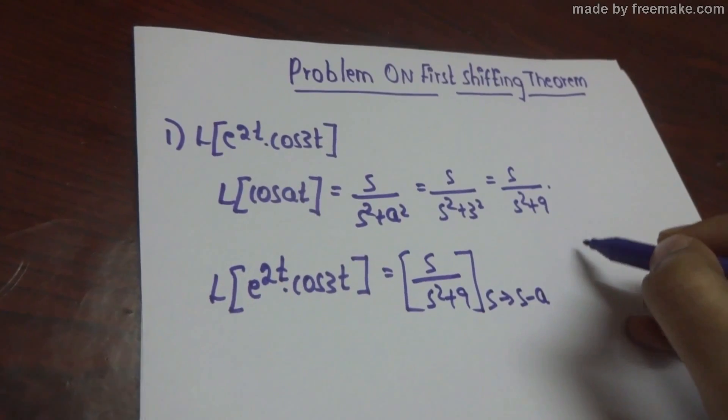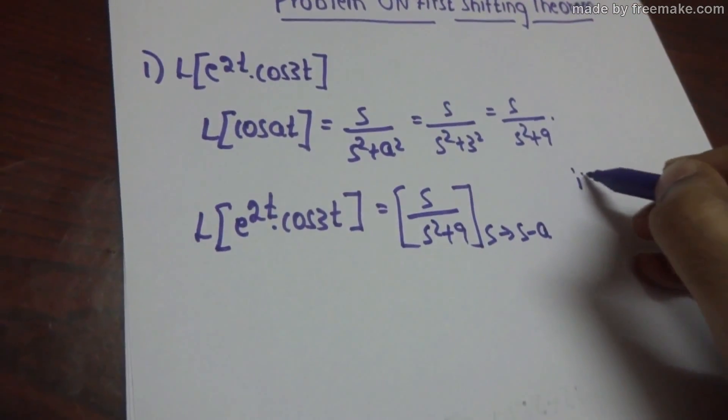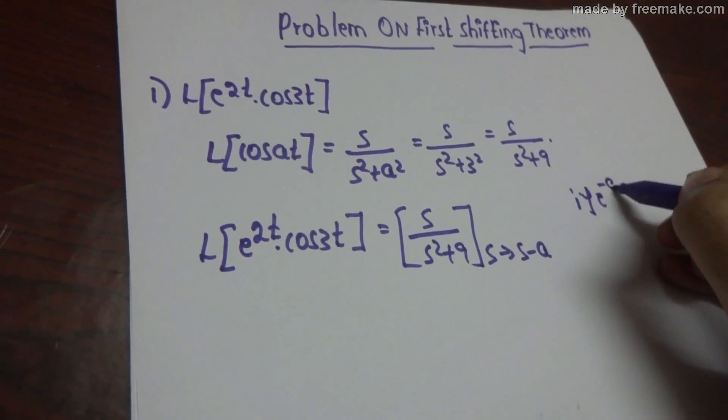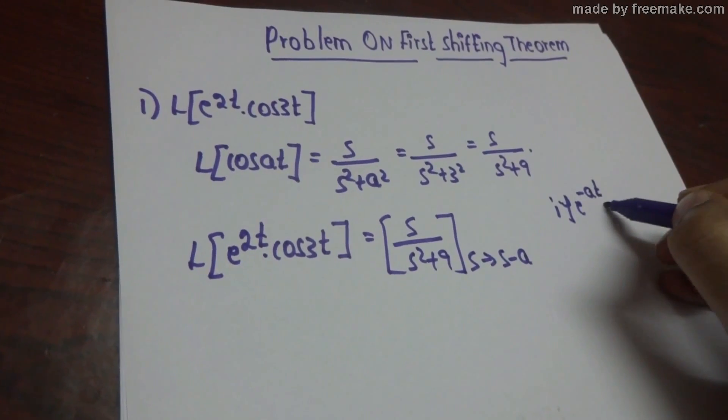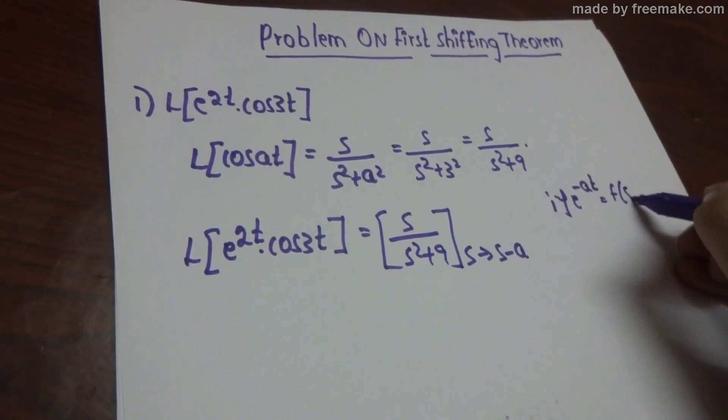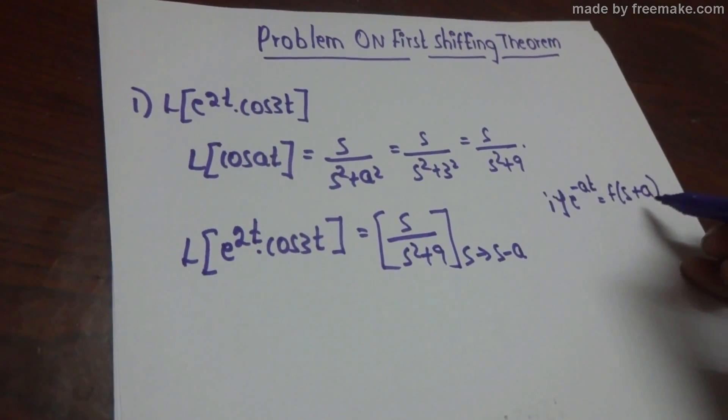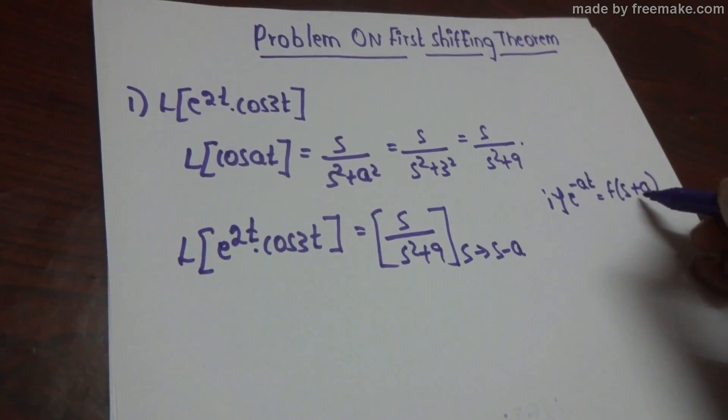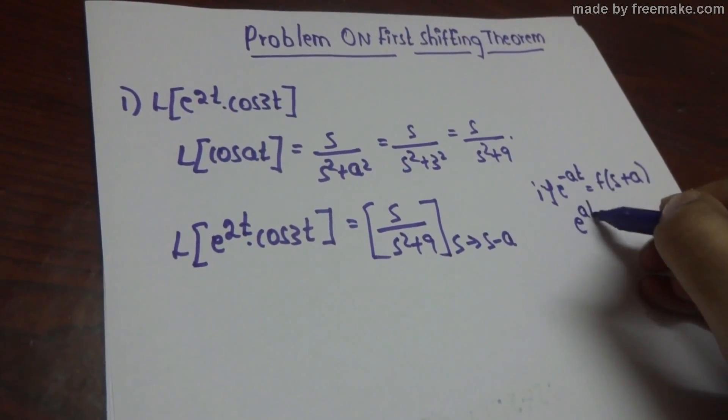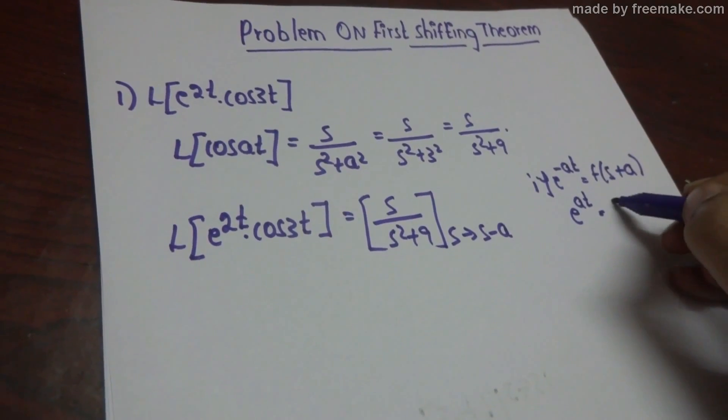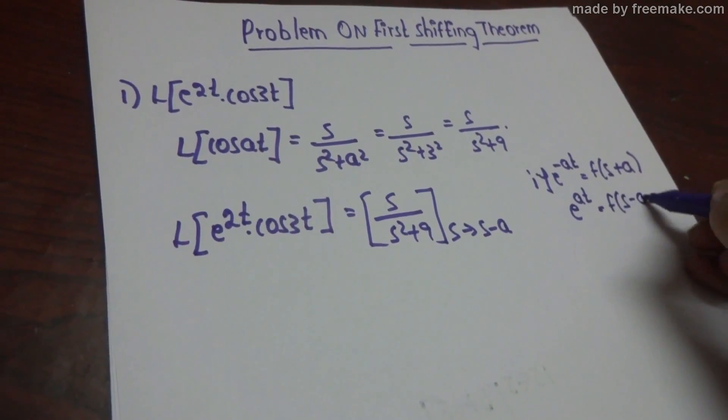We have to remember one thing. If e^(-at) is given, then we should write f(s + a). Here we will replace with plus a. If e^(at) plus term is given, then we will write f(s - a).